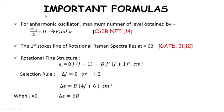Some important formulas: for an anharmonic oscillator, the maximum number of levels is obtained by setting dEᵥ/dV = 0 — differentiate Eᵥ with respect to V and solve for V. This was asked in CSIR 2014. The first Stokes line of rotational Raman spectra is 6B. For rotational fine structure, the selection rule is ΔJ = 0 or ±2, and the energy spacing is B(4J + 6).